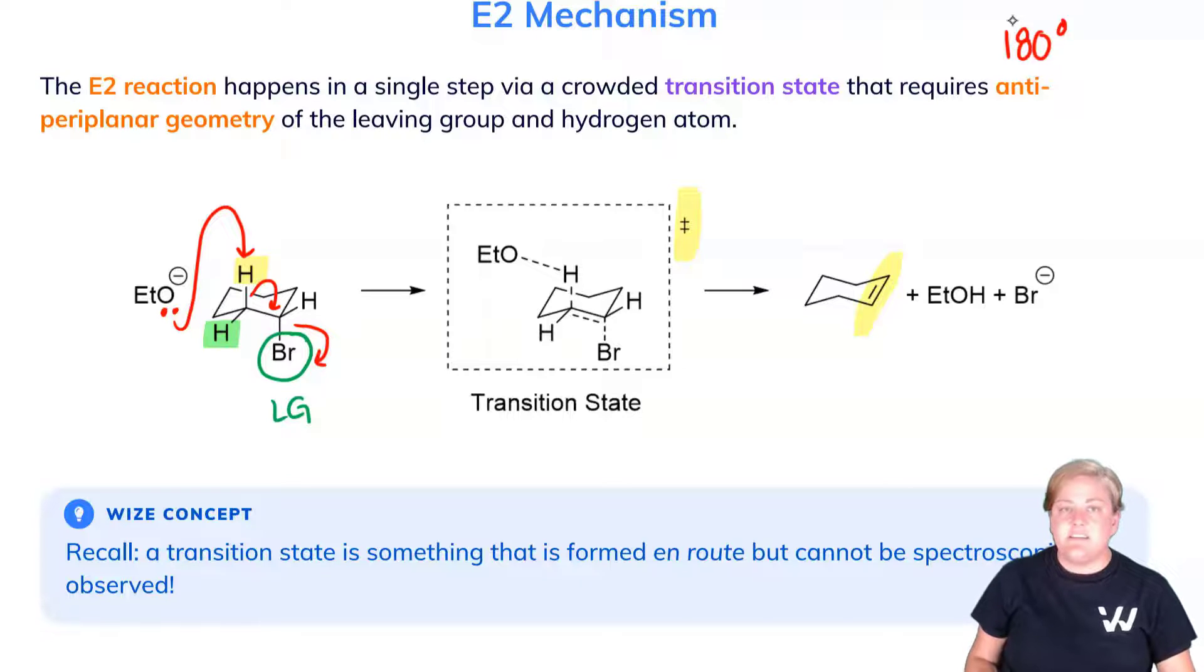Remember that this transition state here is a proposed structure. It's not something that's spectroscopically observed. So here you see this anti-periplanar geometry in the chair conformation. Beware for it. It's something a lot of people will forget, so just watch out as it will dictate whether or not a reaction will occur.